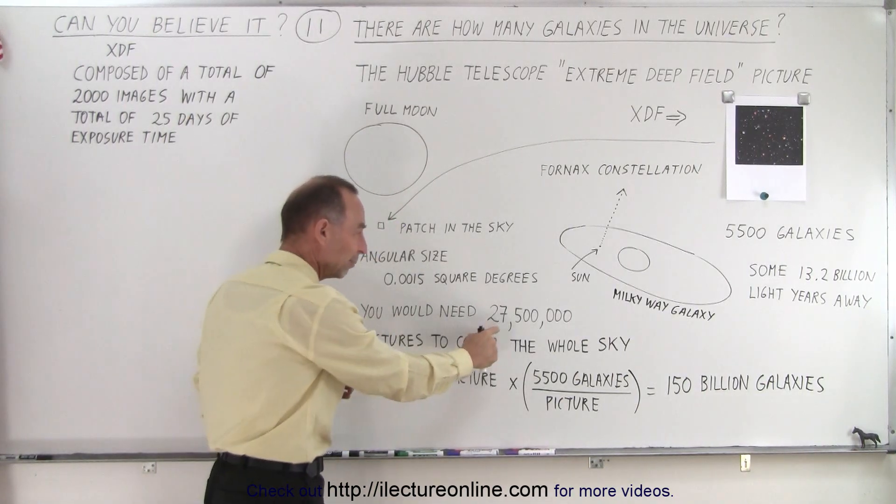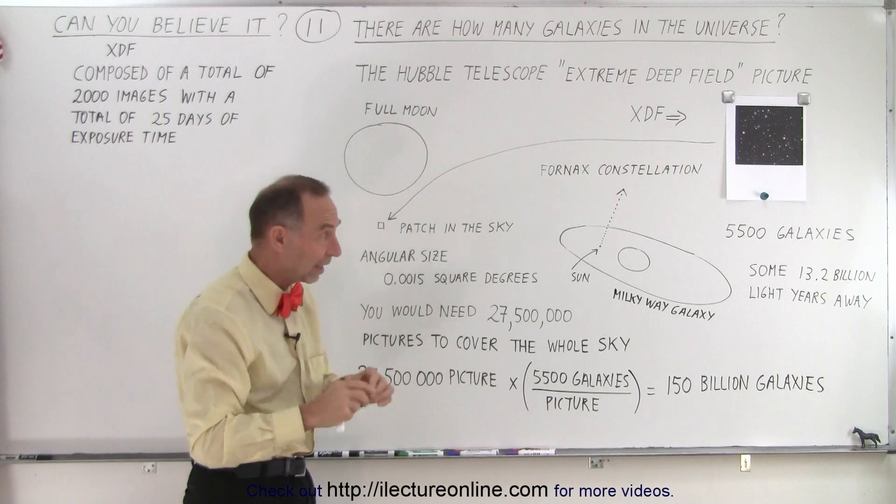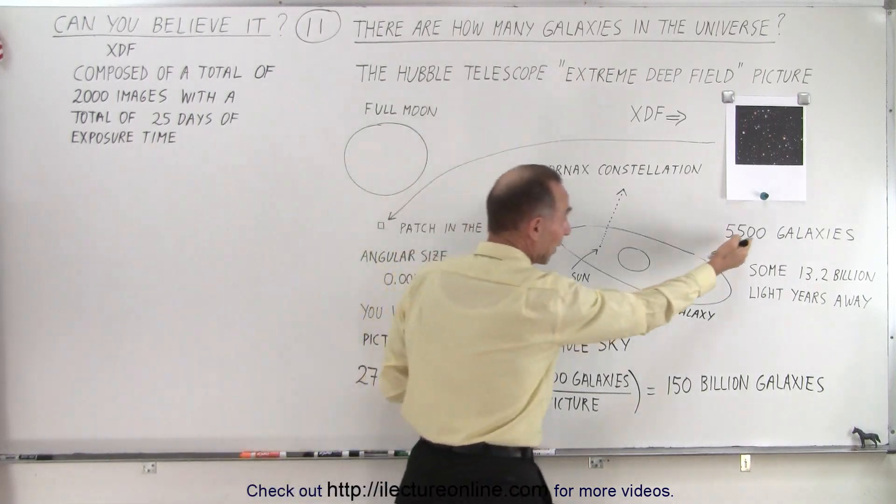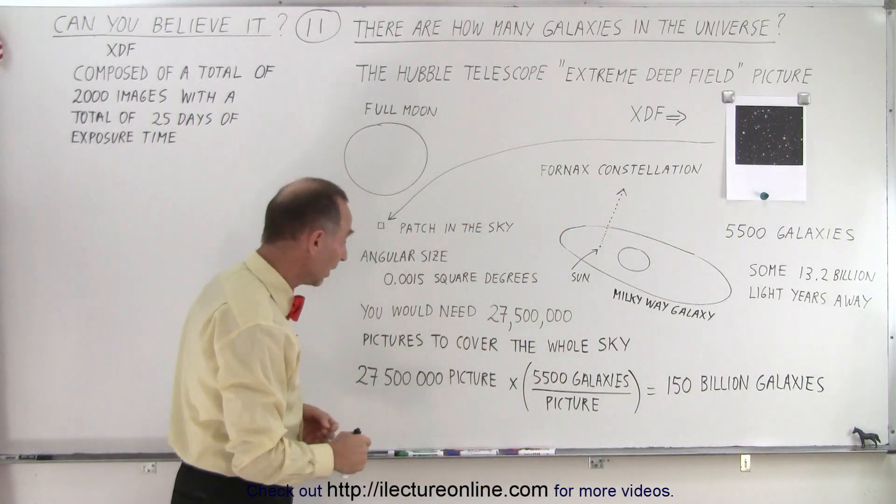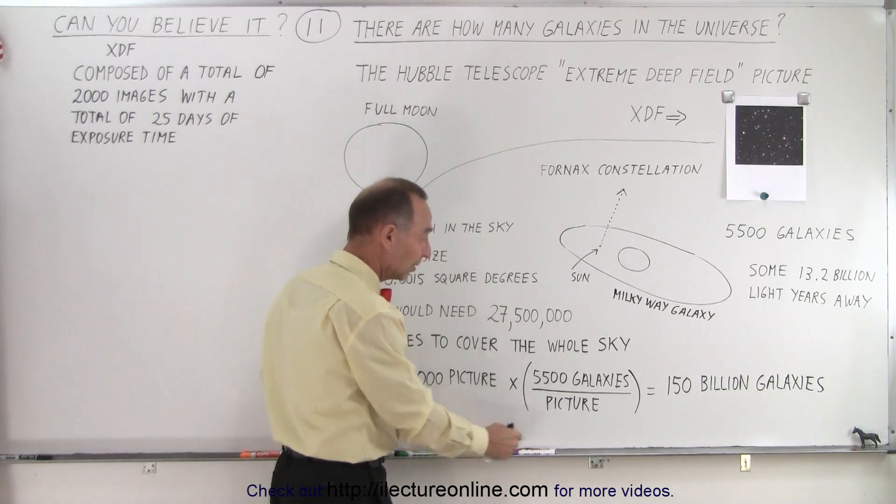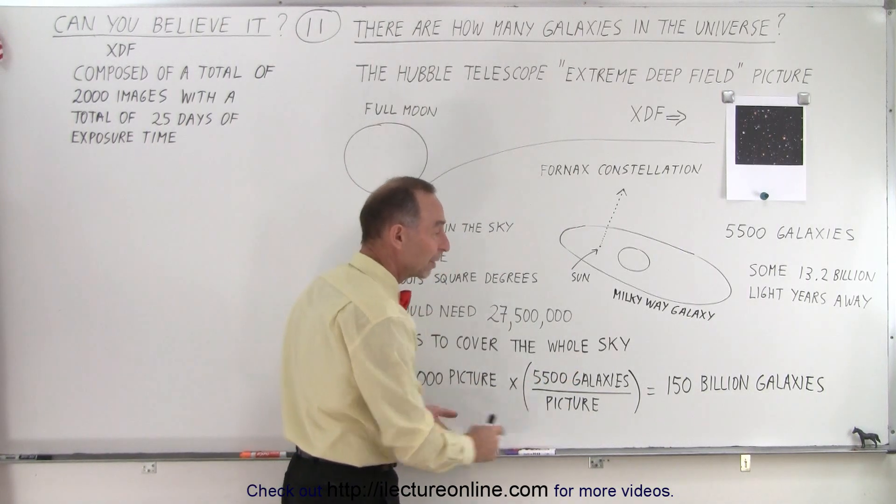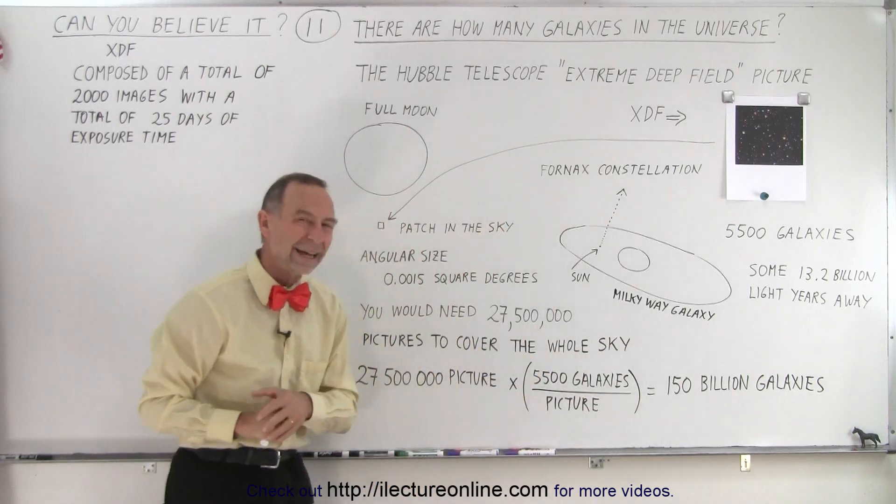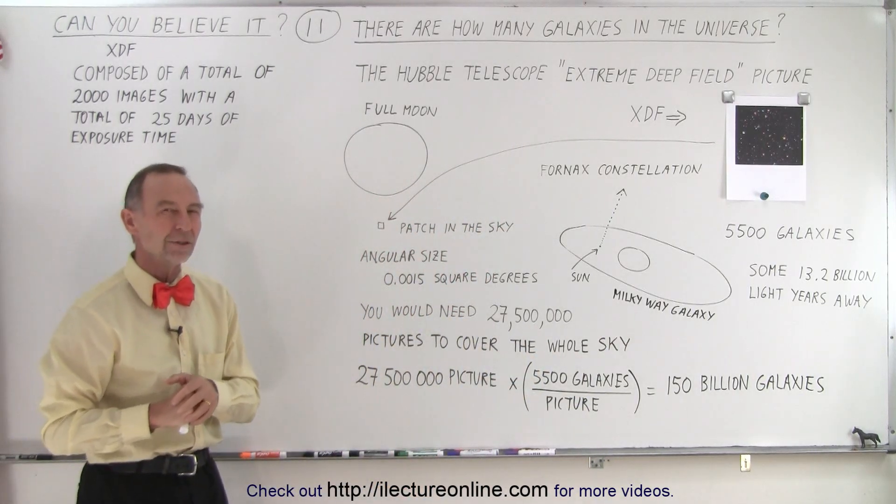So if you take 27.5 million patches, and assuming that each one of them would have about 5,500 galaxies in them, if you then multiply this number of patches, this number of pictures required, times this many galaxies in each picture, you end up at 150 billion galaxies.